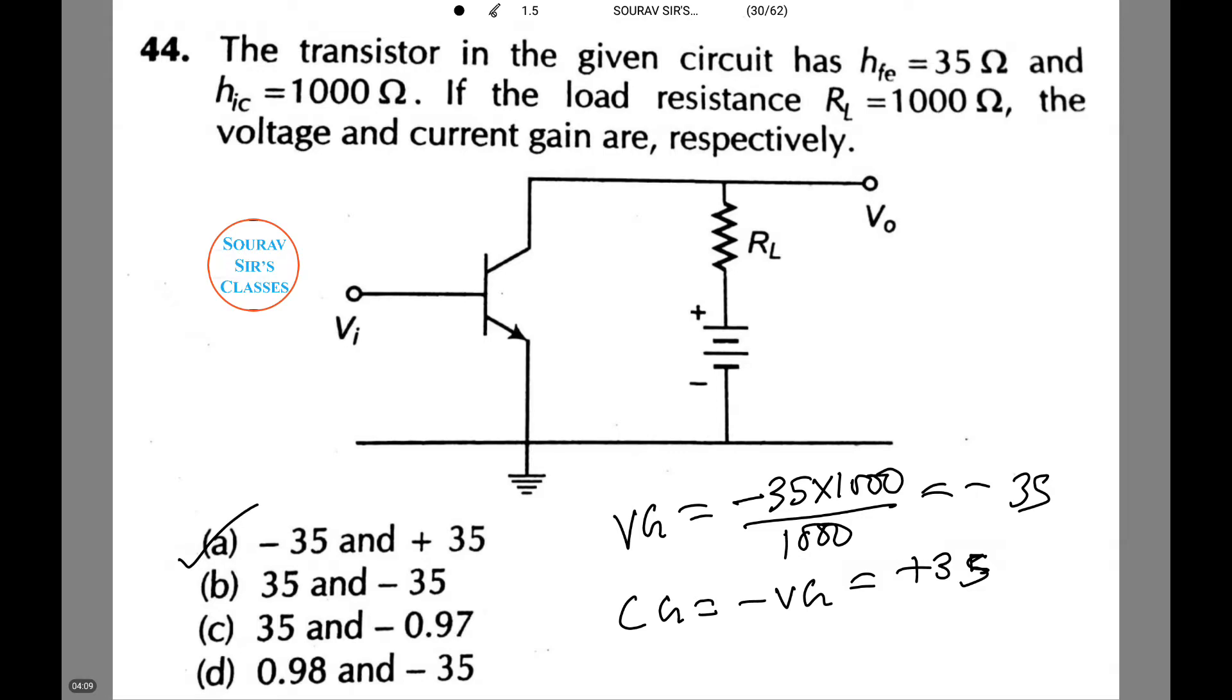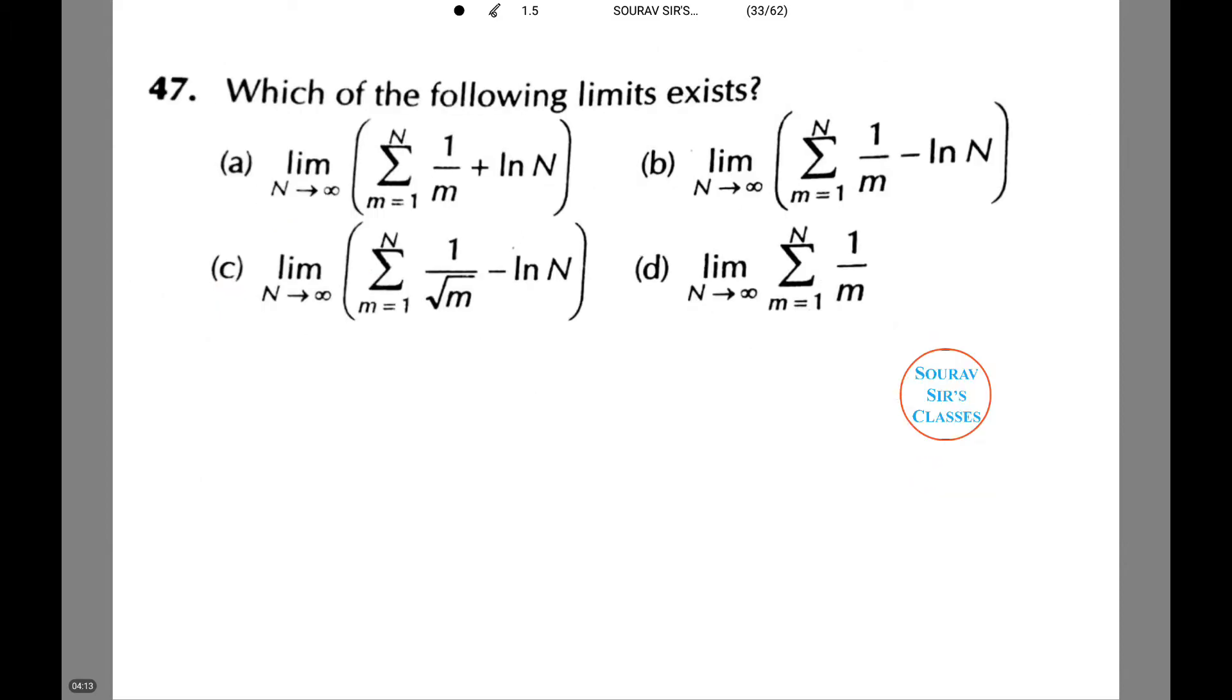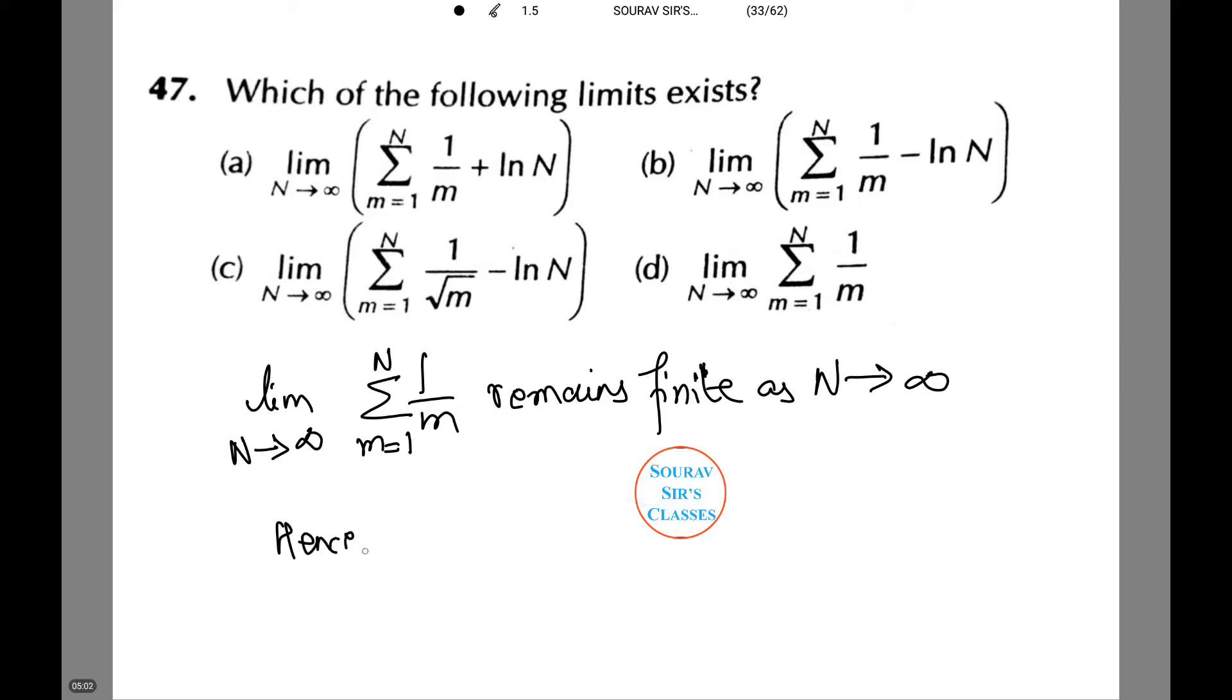Let's see another such type of question. Now we need to figure out which of the following limits exist. Please observe each and every equation given as A, B, C, D. Look at the limits specifically and you will be able to understand. Upon observation you see that limit n tends to infinity, summation m equals to 1 to n of 1 by m, which is option D, remains finite as n tends to infinity. Hence only D exists.